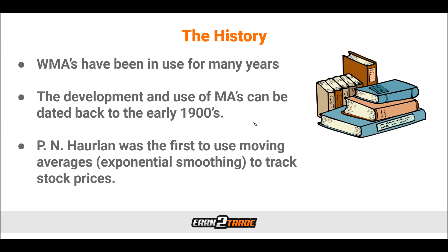Technical analysts have been using moving averages for many, many years. They are often categorized under a group of tools that deal with time series analysis. We have other things in this category that you might be familiar with, like the arithmetic mean, covariance, and correlation coefficient. The development and use of moving averages is believed to date as far back as the 1900s, somewhere around 1901. It wasn't until a few years after 1901 that the name was associated with the technique for smoothing data points over a given period — in the very beginning, we didn't even have the name that we're using today for it.